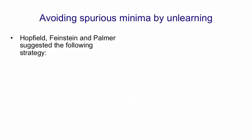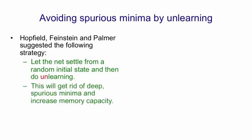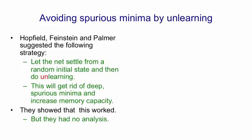One very interesting idea that came out of thinking about how to improve the capacity of a Hopfield net is the idea of unlearning. This was first suggested by Hopfield, Feinstein and Palmer who suggested the following strategy: you let the net settle from a random initial state and then you do unlearning — that is, whatever binary state it settles to, you apply the opposite of the storage rule. With the previous example, that red merged minimum — if you let the net settle there and did some unlearning on that merged minimum you'd get back the two separate minima, because you'd pull up that red point. So by getting rid of deep spurious minima we can actually increase the memory capacity. Hopfield, Feinstein and Palmer showed that this actually worked, but they didn't have a good analysis of what was really going on.